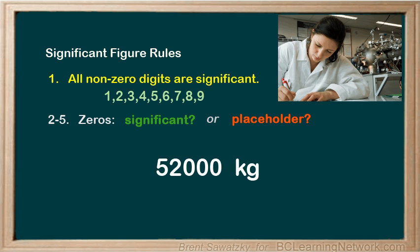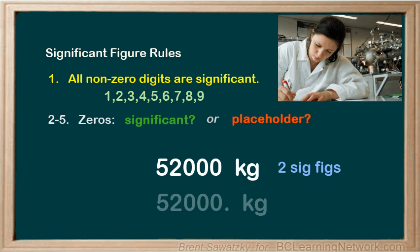Well, when you get a bunch of scientists together, things don't stay unsolved for too long. The way to solve this — other than writing it in scientific notation, which of course solves all these questions — is to just show a decimal right here. If all these zeros were significant, this decimal at the end indicates that. This is the most commonly accepted way of solving this dilemma. If you don't see a decimal at the end, then you know all those trailing zeros are just placeholders letting you know it's a big number. If you see a decimal at the end, then you know all the preceding zeros are significant. So in this case, without the decimal, 52,000 has two sig figs.